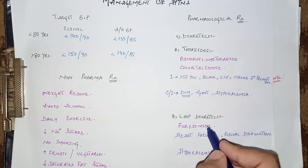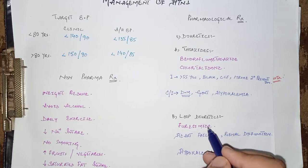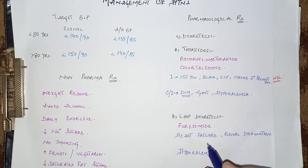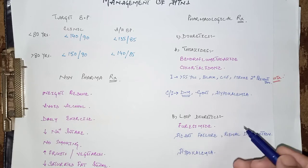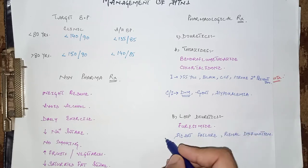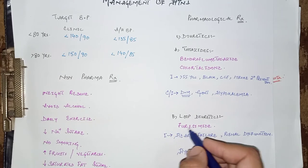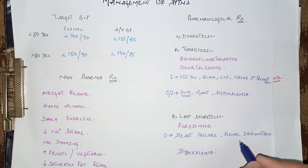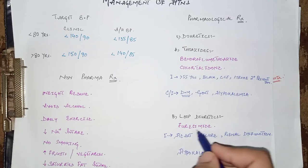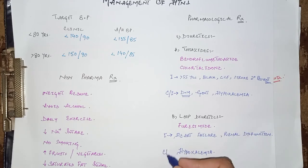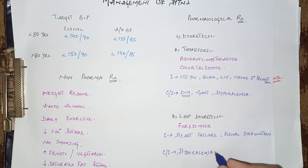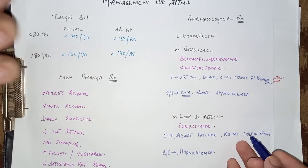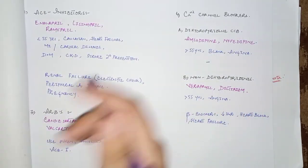The next class is loop diuretics, which include furosemide and bumetanide. These drugs act on the ascending limb of the loop of Henle and inhibit the sodium-potassium-2 chloride (NKCC2) channel, causing loss of sodium, chloride, and potassium into the urine, resulting in natriuresis and diuresis. The secondary compelling indications are hypertension with heart failure and renal dysfunction. They should be used cautiously in hypokalemia.